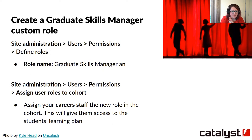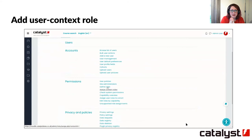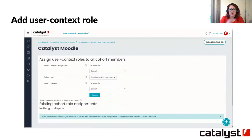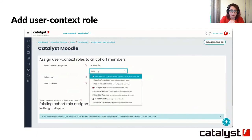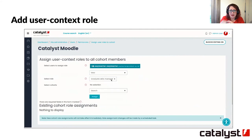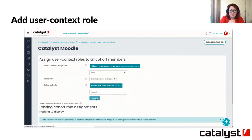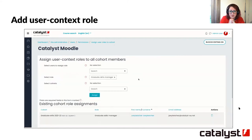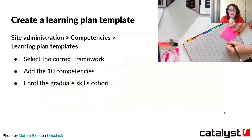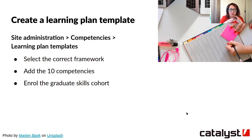When assigned this specific role against a specific cohort, that person can review all the plans for that cohort. You select the name of your careers advisor, give them the new custom role, then pick the learning plan and assign them to the cohort. The learning plan setup is actually quite easy — you go to Site Admin, find it under competency sections, learning plan templates. Create your template, pull your 10 competencies into it, and then enrol your graduate skills cohort. This deploys that learning plan with that list to all the learners in that cohort.